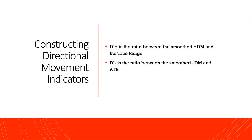To summarize: DM plus is the ratio between the smoothed (averaged) DM plus and Average True Range. DM minus is the ratio between the smoothed DM minus and Average True Range. Now we know how to compute both DM plus and DM minus.